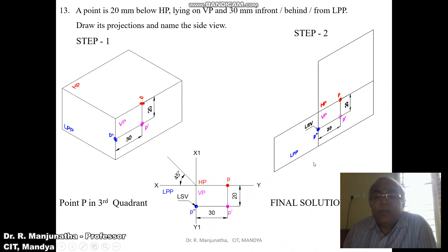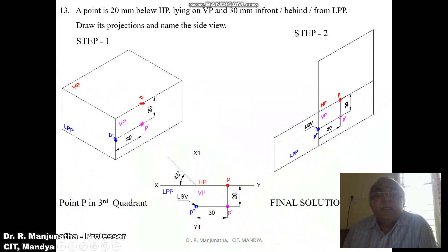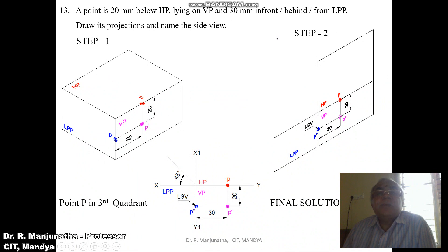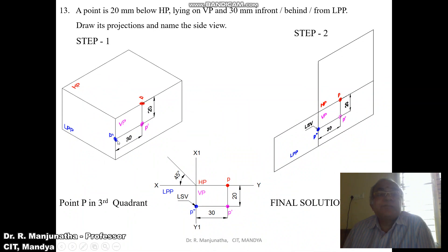We are going to cut here and then open HP to the top and LPP to the left — the half vertical plane. The corresponding points are also rotated. Since the point is lying on VP, it should be on HP, so it will be on the XY line in the top view. This point will become small p. The distance with respect to the profile plane — that is behind LPP, the distance of 30mm — is seen in both VP and HP.